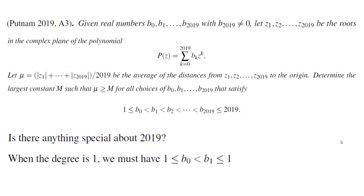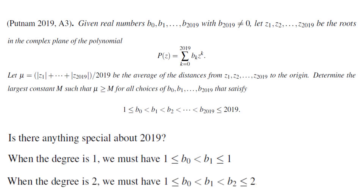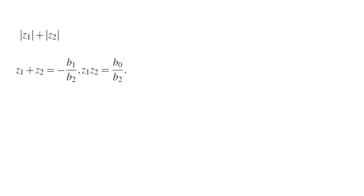When the degree is 1, the coefficients must be between 1 and 1, which is clearly impossible. When the degree is 2, we have a relation between the coefficients, and we could solve the problem using the quadratic formula. However, this approach cannot be generalized, so instead I'm going to look at a more systematic way. I'm trying to find the infimum of |z1| + |z2|. I know there's a relation between the coefficients and the roots — the so-called Vieta's formulas. The sum of the roots is -b1/b2 and the product of the roots is b0/b2.